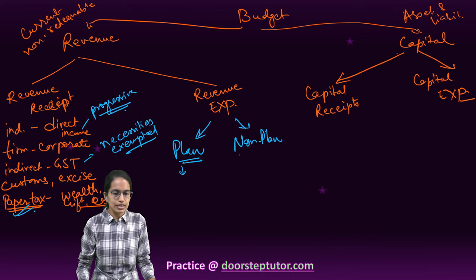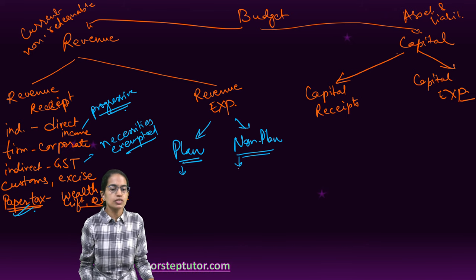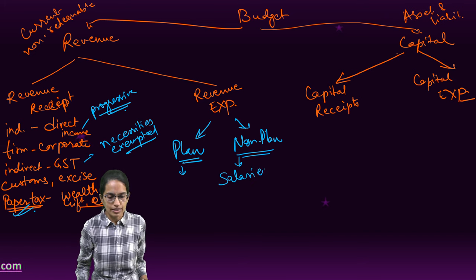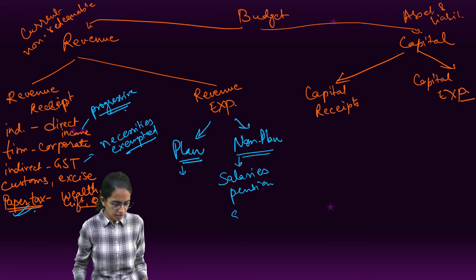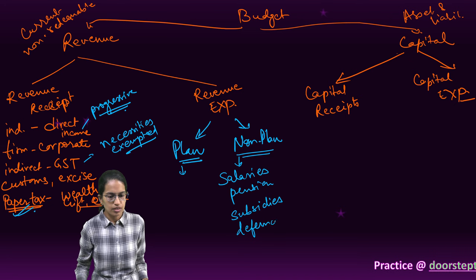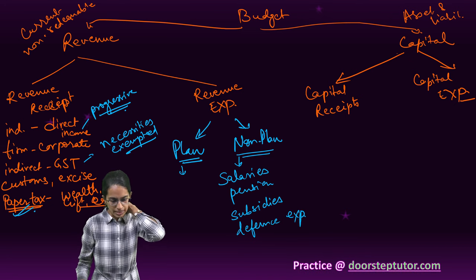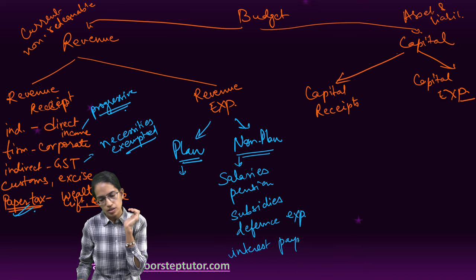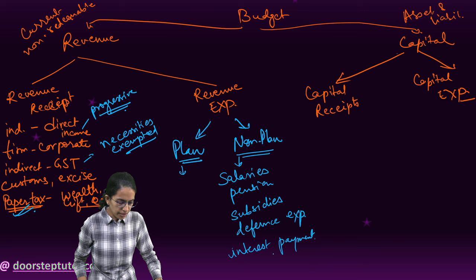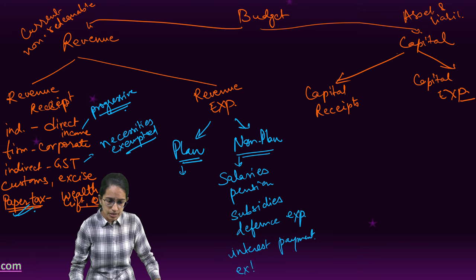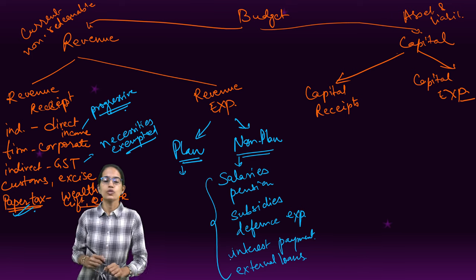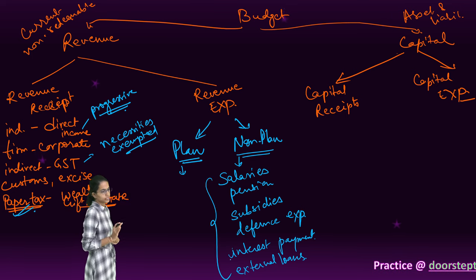Non-plan expenditure includes things not actually planned. This would include salaries, pensions, subsidies, defence expenditure, and interest payments. If the government has taken a loan, it would pay the interest for the same. There can also be external loans. All of these go under non-plan revenue expenditure.